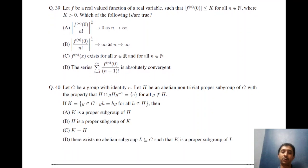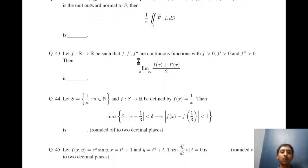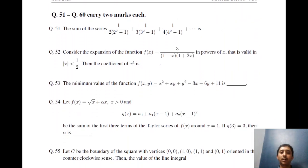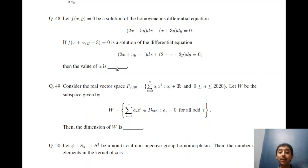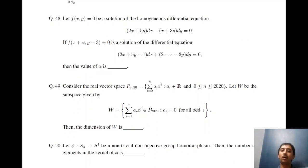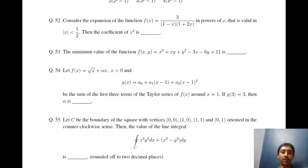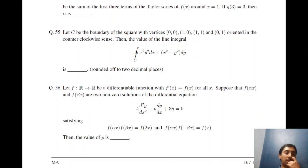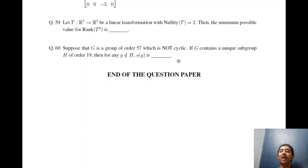Questions 31 to 40 cover all topics. In Section C, questions 41 to 50 are for one mark each and questions 51 to 60 are for two marks each. Each of these is a fill-in-the-blank numerical answer type question. The answer is a signed real number — it can be positive, negative, or zero — and you must write the answer correct to at least two or three decimal places. The correct answer is given in a range, and if your answer falls within that range it is considered correct. There is no negative marking and no partial marking in Section C.